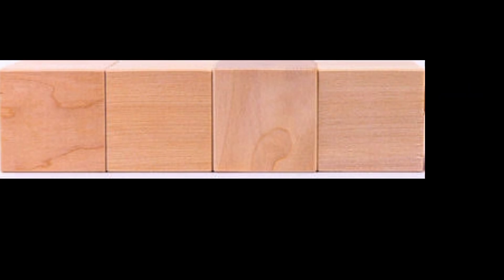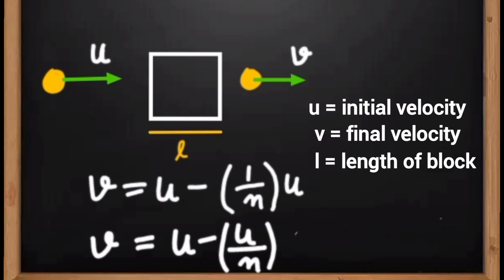As we know, initial velocity of bullet is u. And for a single block, it loses 1/n of its initial velocity. So we can write final velocity of bullet after passing through a single block as v = u - (1/n)u, or v = u - u/n.